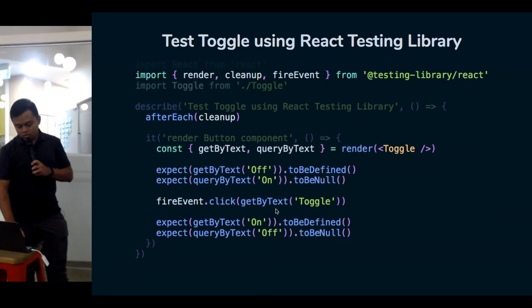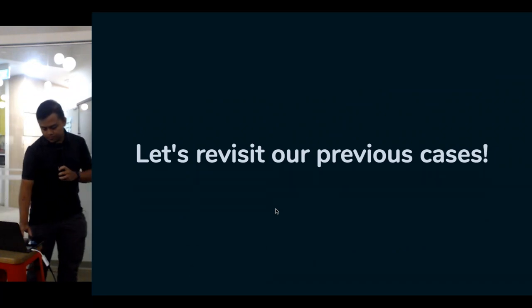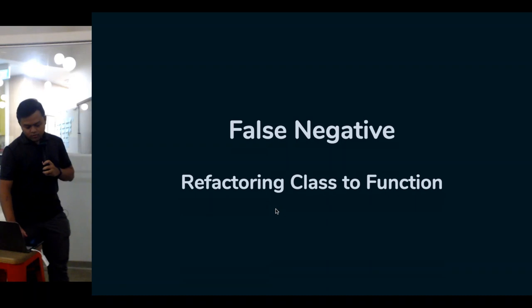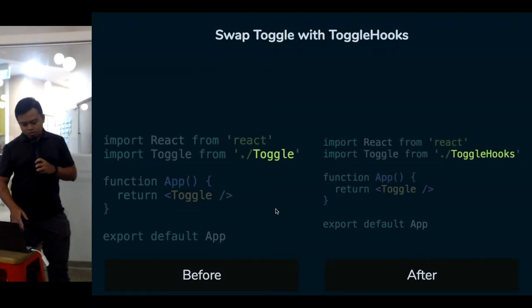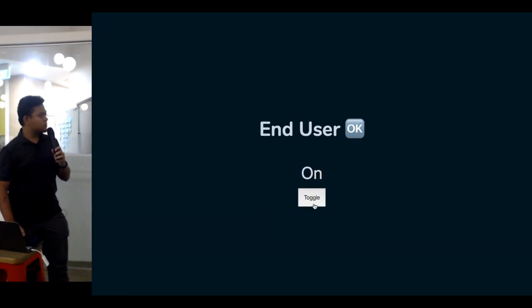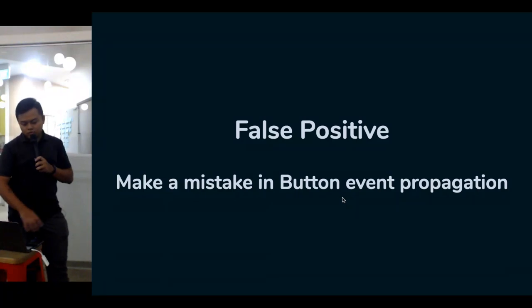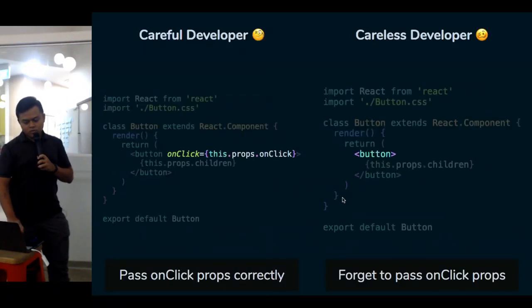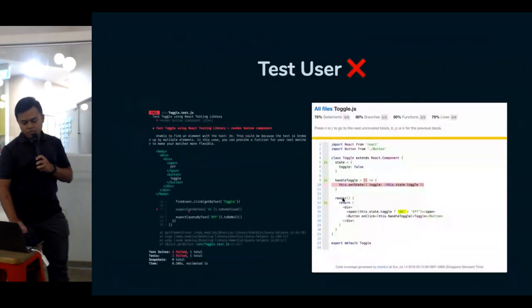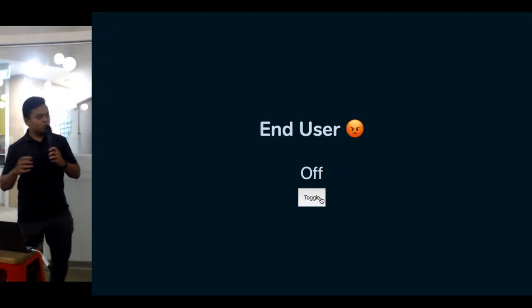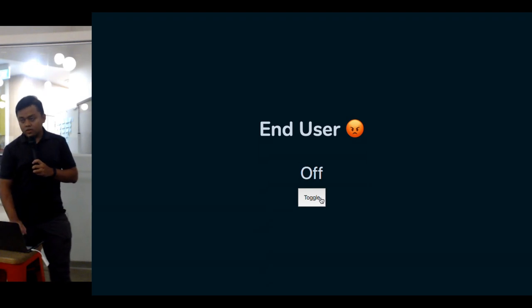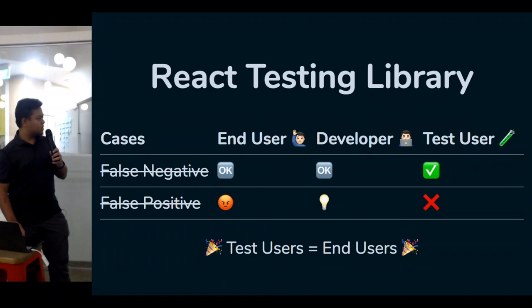Let's revisit our previous cases using this test. For the false negative case, after swapping the class component to a function component, the end user feels fine and the test still passes. For the false positive case, the careless developer's mistake is caught by the test — the test is coherent with the end user experience. The test user is now aligned with what the end user experiences.